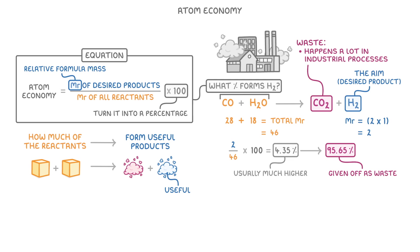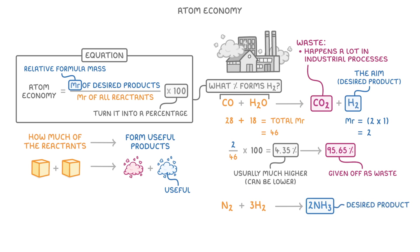In general, atom economies are usually much higher than this, but they can also be even lower. As an example of a reaction with a very high atom economy, let's take a look at this one, where we have nitrogen and hydrogen reacting together to form ammonia. Because the desired product, ammonia, is the only product here, the atom economy would be 100%, because all of the reactants are being used to make ammonia. There aren't any other products that could be considered waste.